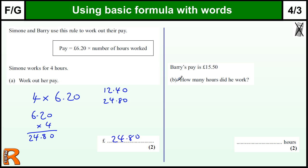The second part of this question, Barry's paid £15.50, how many hours did he work? Now to do this, we should be able to figure out that we've got to divide by £6.20. But that's quite a hard question to do without a calculator.